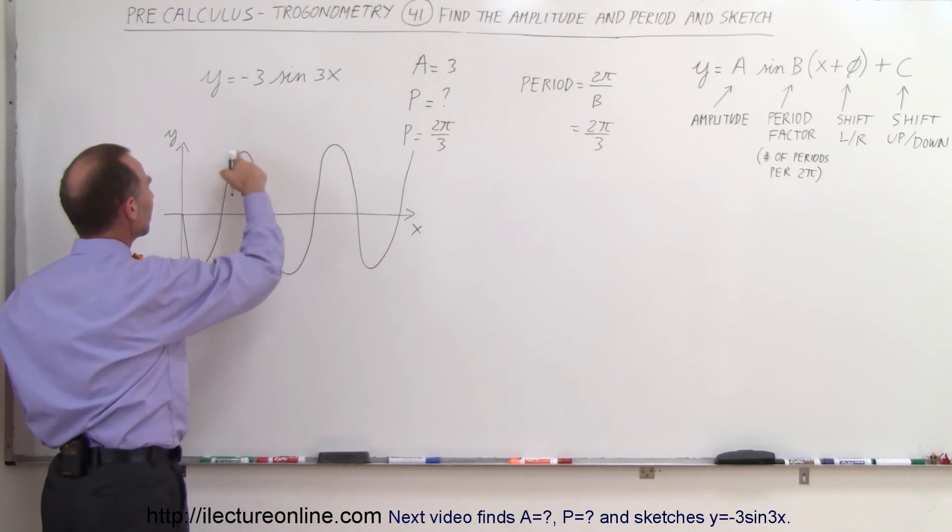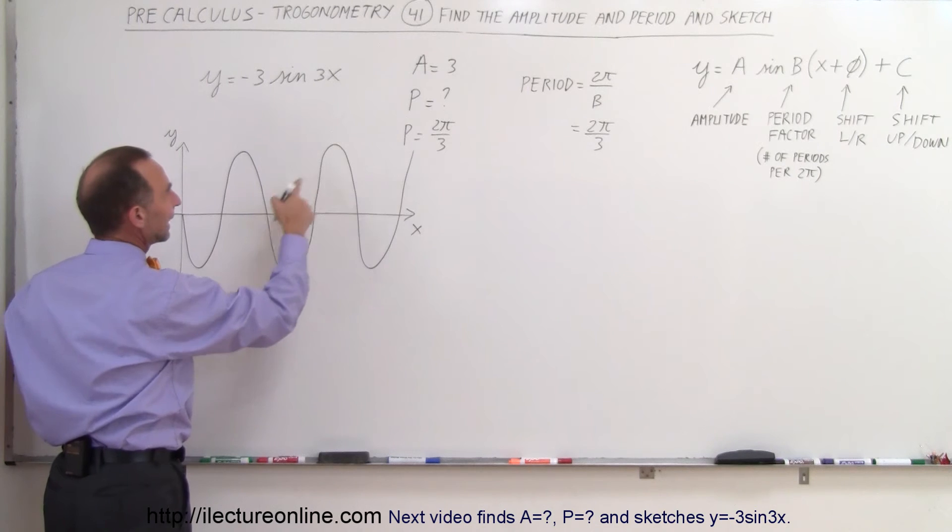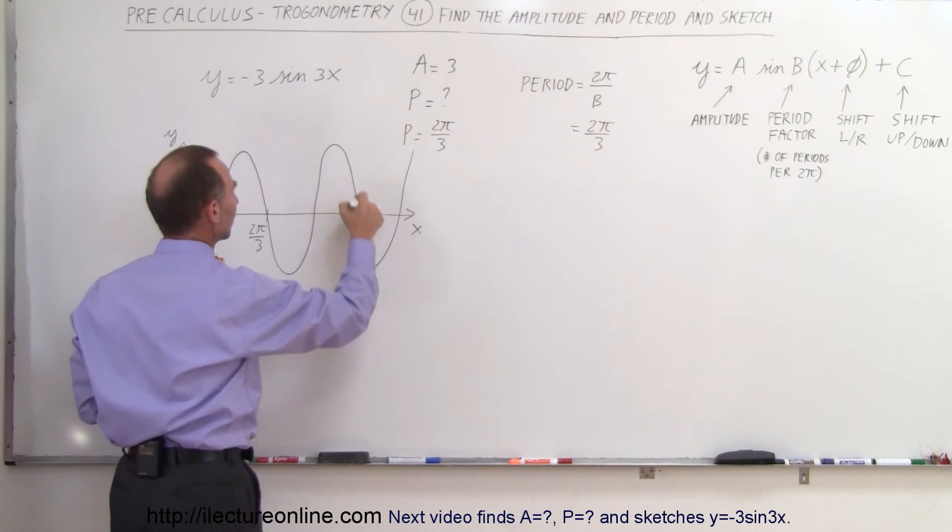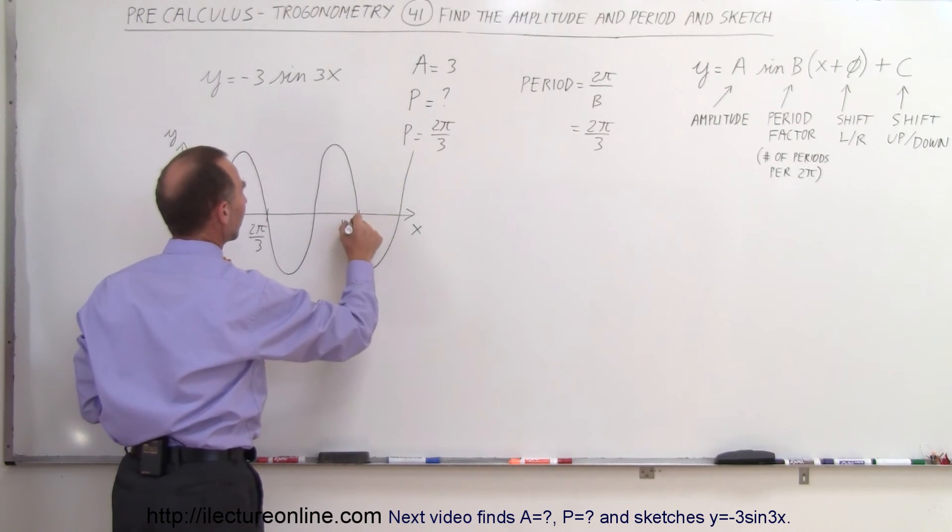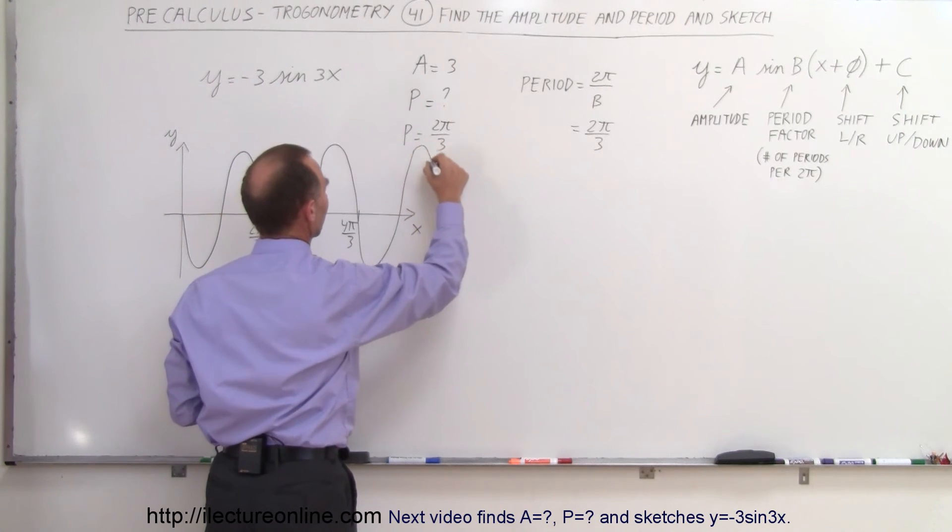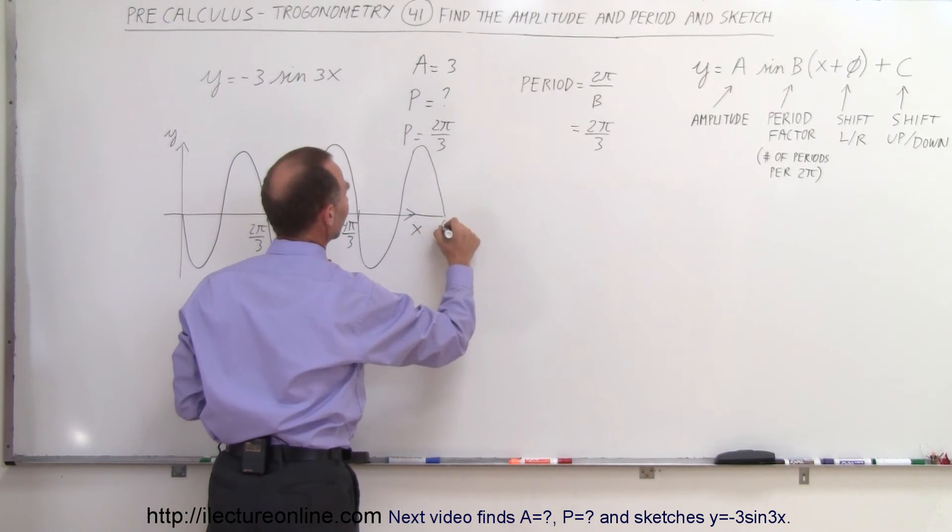Notice it does one complete period in 2 pi over 3 distance so that's 2 pi over 3 and then we have one other complete period that would be 4 pi over 3 and if we do another one we can continue on like this and here this would be 6 pi over 3 which is equal to 2 pi.